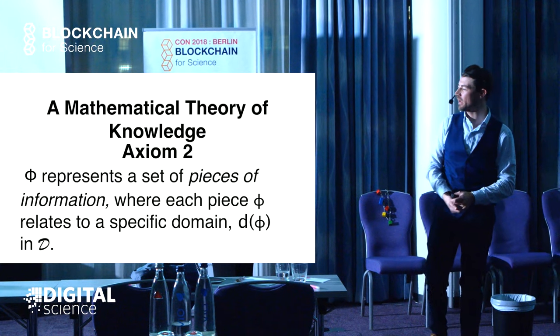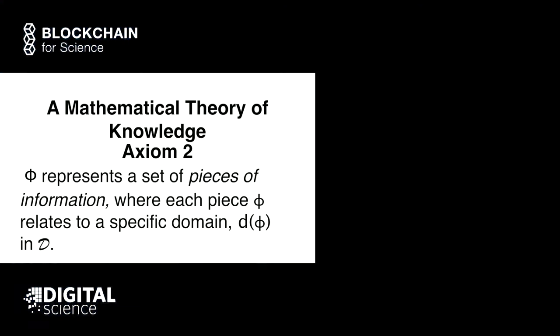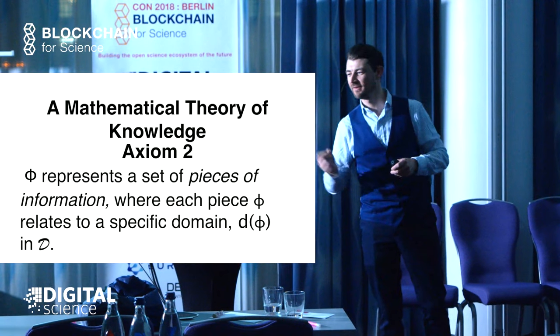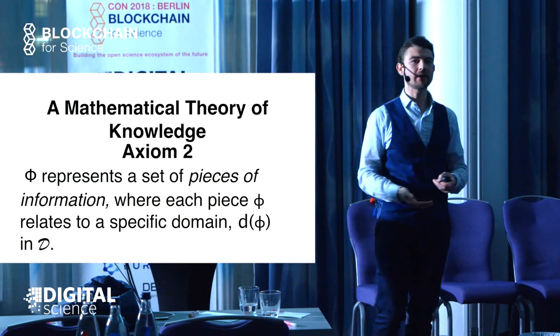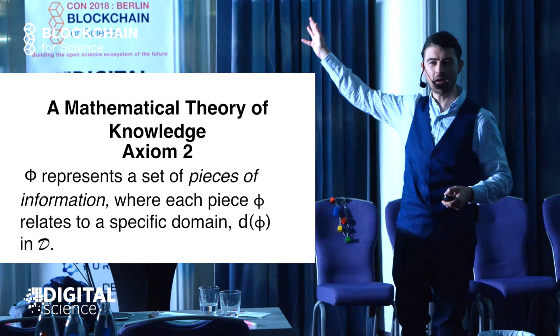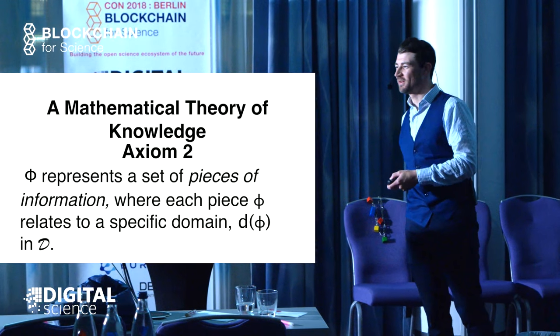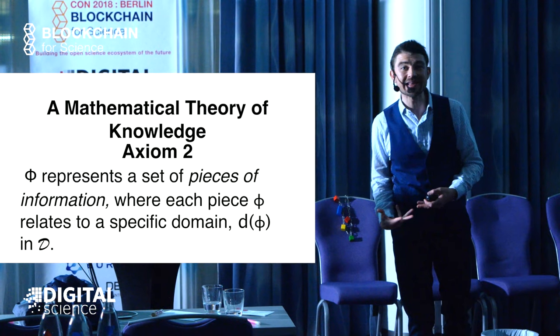Now things are getting serious. Let me take off my jacket here. This is getting serious. So now, back to that. D is a distributive lattice. Good. We've got that now. Everyone still with me? You still awake? Just checking. We have phi here and it represents a set of pieces of information where each piece, that little phi, relates to a specific domain in our lattice of domains D. This is from Professor Colas. So I wish I would have come up with all this myself. I didn't do that.